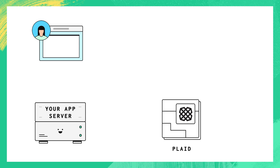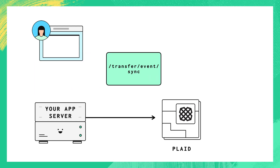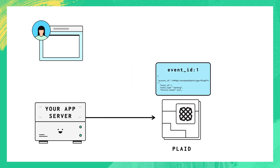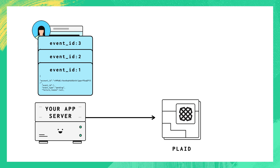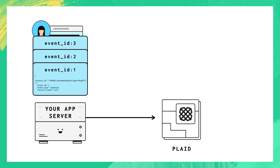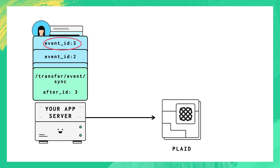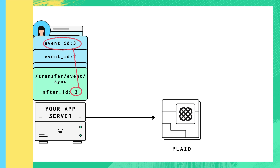To keep track of the changes happening with your transfers, call Transfer Event Sync. This will give you a full list of events, sequentially ordered, across all your transfers. Each event has an ID, which you can use in future calls to make sure you only receive new events moving forward.